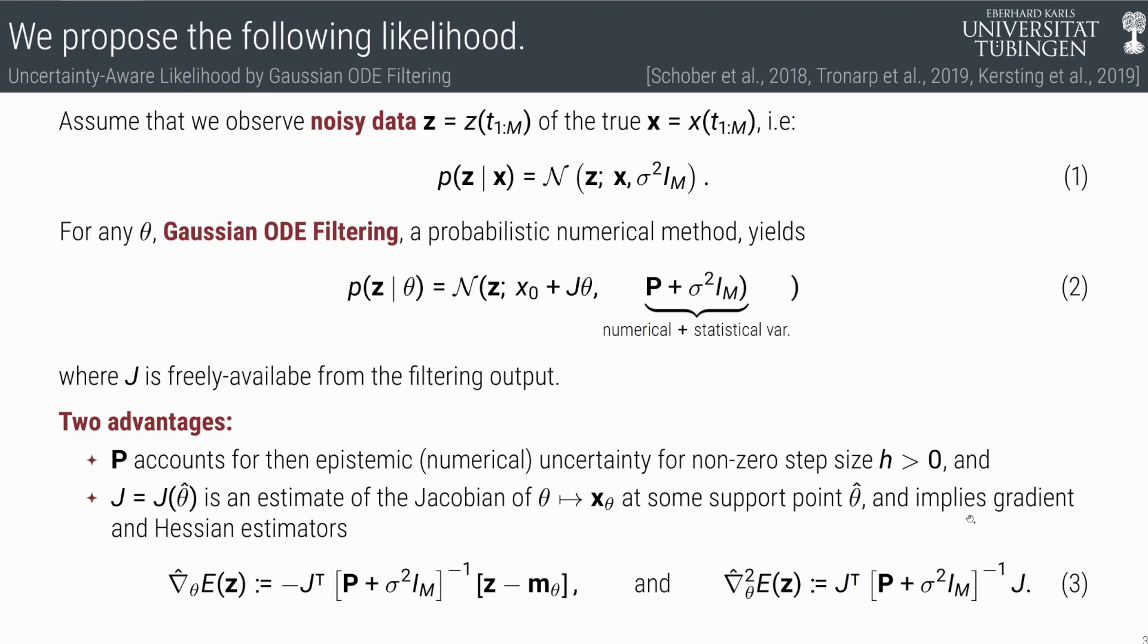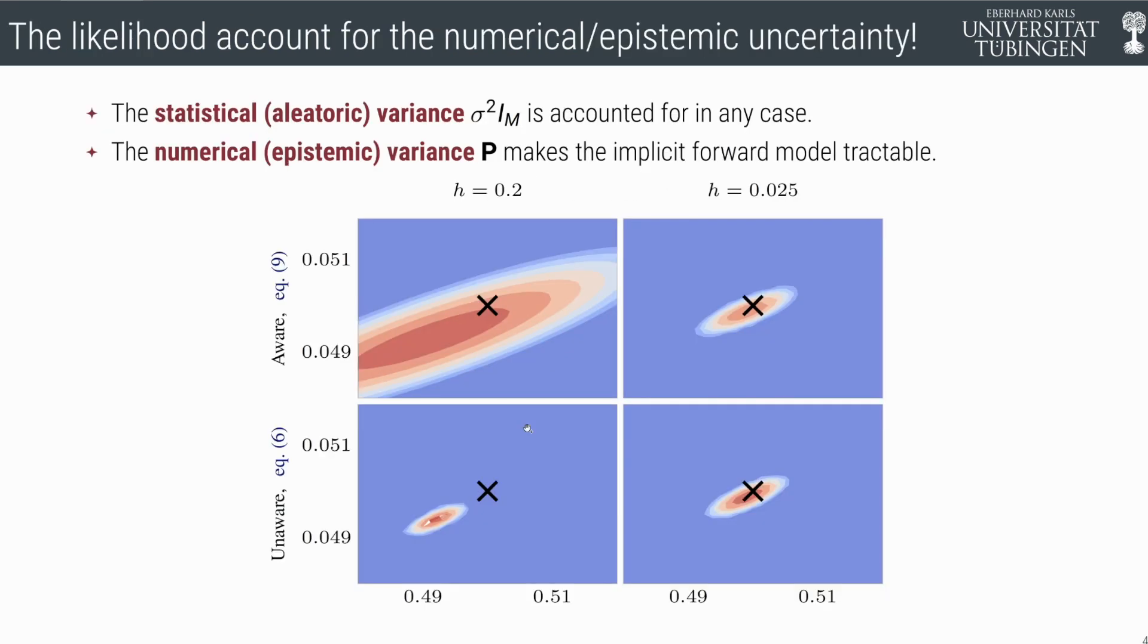This implies a gradient and Hessian estimator. If we plug this Jacobian J into our log-likelihood, we get the gradient and Hessian estimator of the log-likelihood, which you see in equation three. And this is precisely what enables new methods now. But first, let's visualize this.